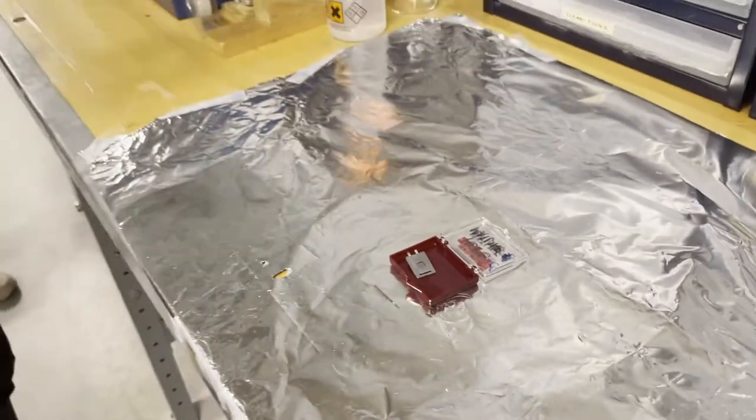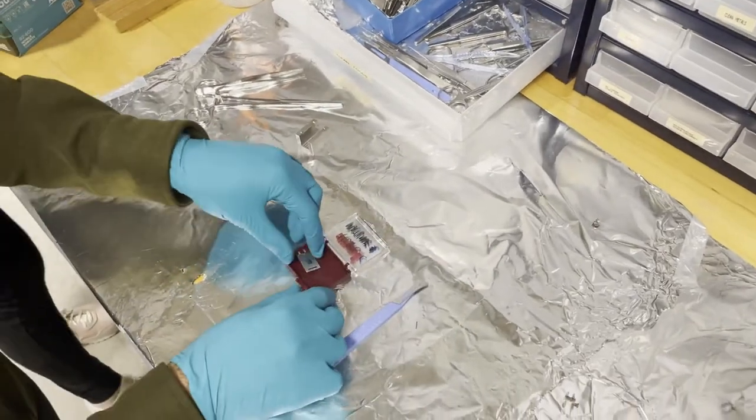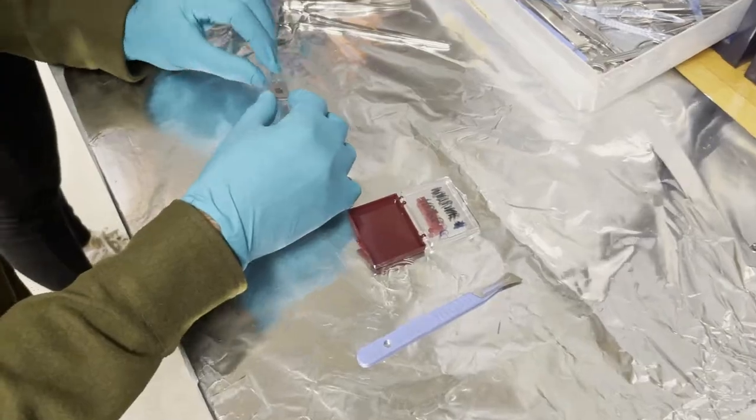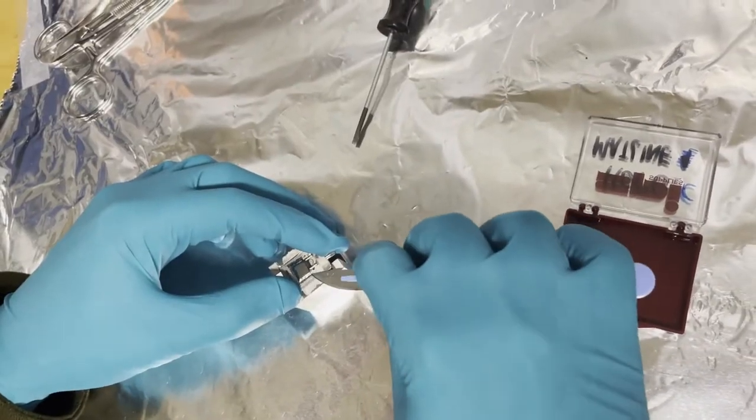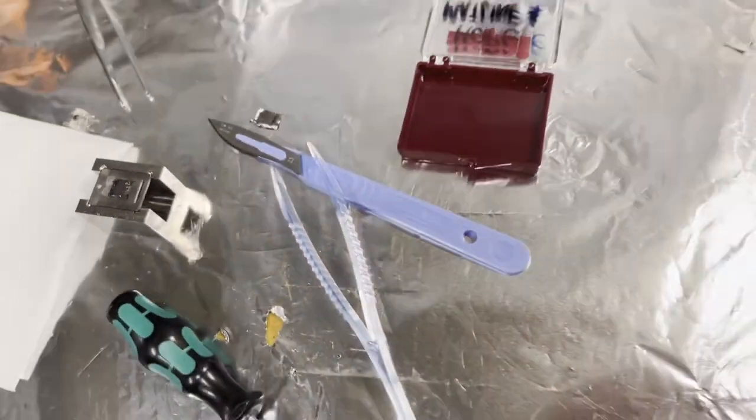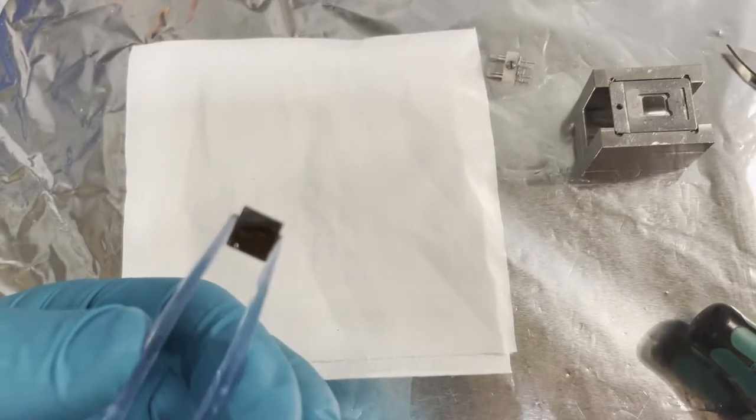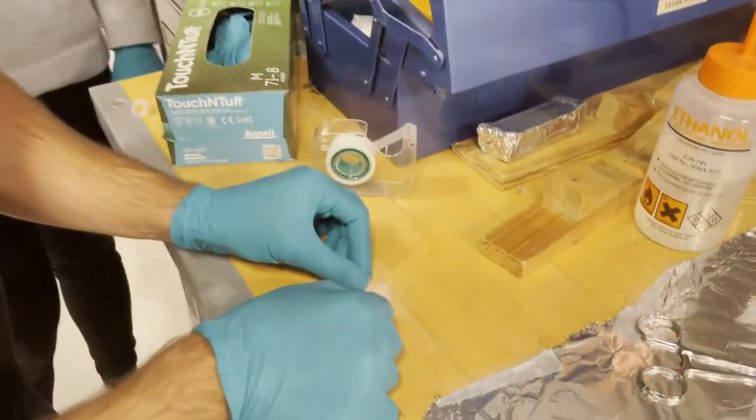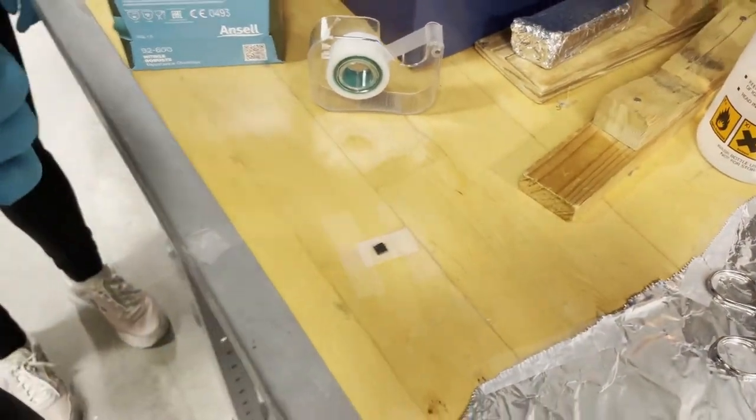We first need to prepare our graphite sample. In order to measure, we need our sample placed in a sample holder like the one you see here. In order for us to scan effectively, we need to have a flat surface, so we need to remove the top layers by cleaving. For that purpose, we use regular scotch tape.